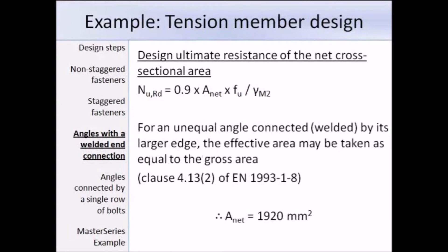The design ultimate resistance of the net cross-sectional area is equal to 0.9 times the net area times the ultimate tensile strength over the partial factor γM2. Clause 4.13 of EN 1993 part 1-8 says that for an unequal angle welded by its larger leg, the effective area may be taken as equal to the gross area. So here the gross area is 1920mm², and we just set that equal to the net area as well.